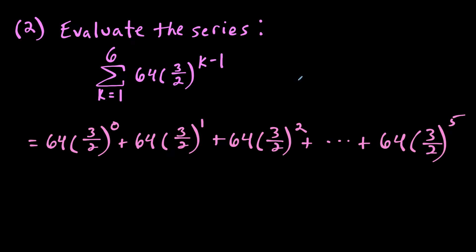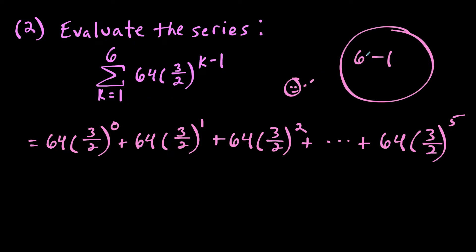Sometimes this throws students off — they do 6 minus 1 and think there are only 5 terms. But this is inclusive: you take the top number minus the bottom number, then add 1 because you're including both k equals 1 and k equals 6. So be careful of this — it's a bit of a trap to think there are only 5 terms.